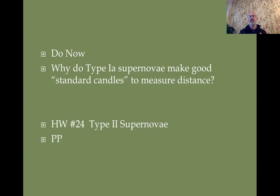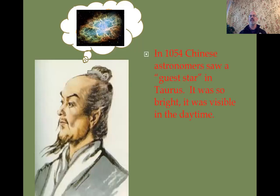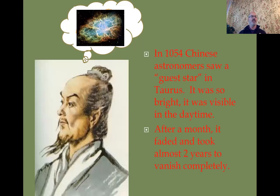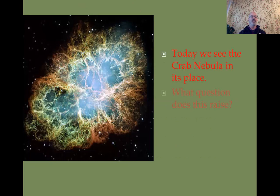In the year 1054, Chinese astronomers saw a 'guest star' in the constellation Taurus. It was so bright it was visible in the daytime. After a month it faded, and it took almost two years to vanish completely. Today, in that place, we see what we call the Crab Nebula.